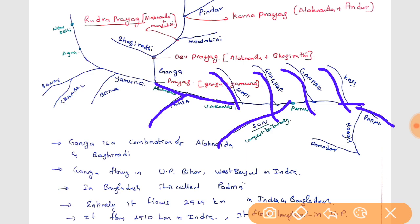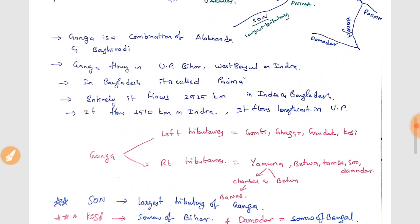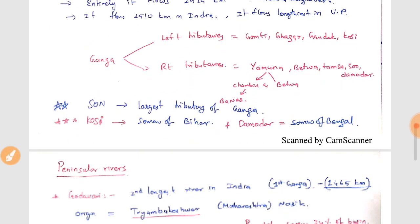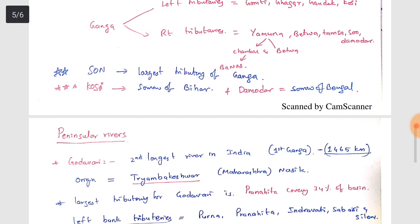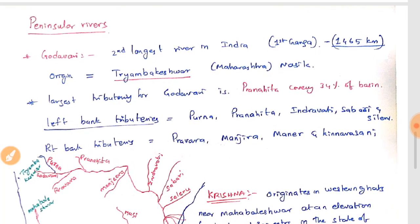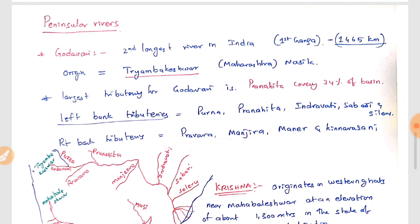Left tributaries of Ganga: Gomti, Ghagra, Gandak, and Kosi. The largest right tributary of Ganga is Son. Ganga enters Bangladesh and is called Padma. Hooghly is also a tributary of Ganga. Kosi is called the Sorrow of Bihar; Mahanadi is called the Sorrow of Bengal — important facts to remember. This completes the Himalayan rivers.